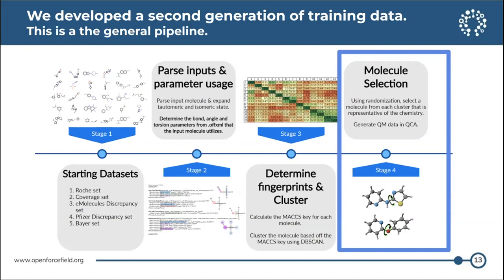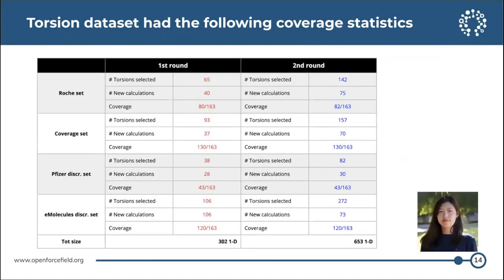Now to look at the resulting coverage data and explore the diversity of the different data sets. These results are from Hesu, who generated the torsion data sets. In her first round of selections, she selected one torsion per parameter randomly and achieved pretty good coverage. In the second round, she selected one torsion per cluster, meaning each parameter could have more than one torsion, and overall we submitted many new calculations to QC archive for our gen 2 training data set.